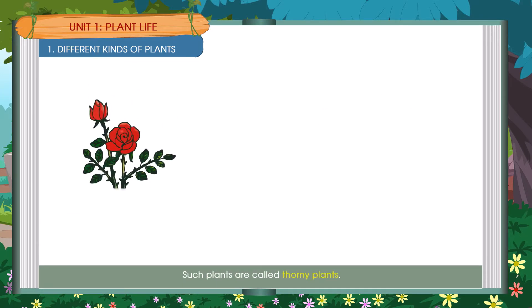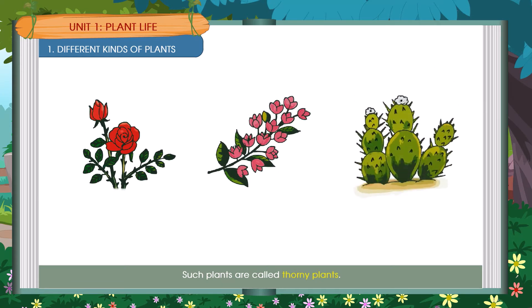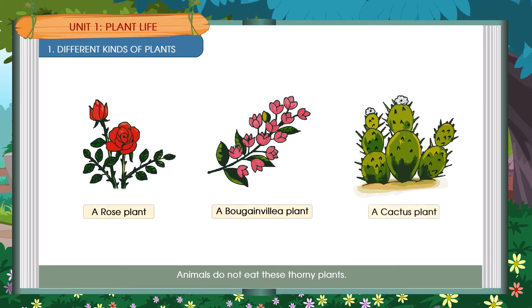Such plants are called Thorny Plants. Animals do not eat these thorny plants. A Rose Plant, A Bougainvillea Plant, A Cactus Plant.